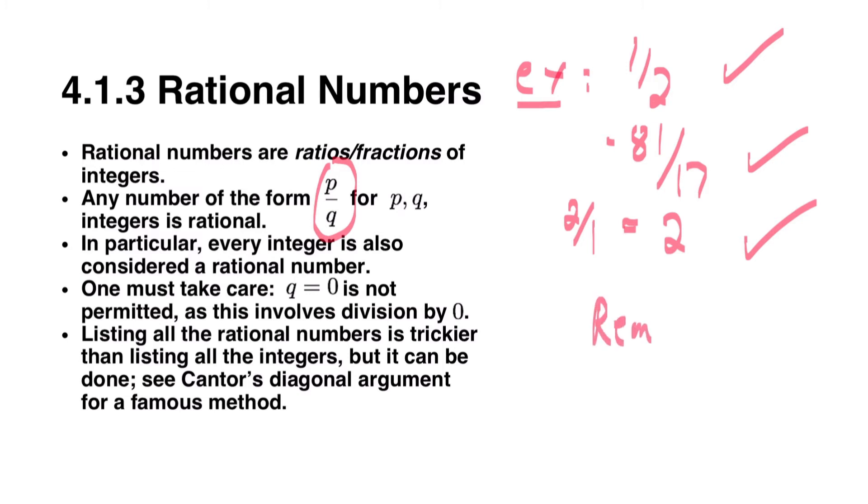I'll remark that rationals have many representations. For example, one half is equal to two fourths. These are two ways of writing the same number.